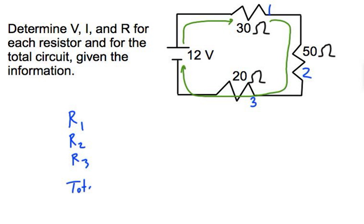I'm also going to make a total row. Then across I have V, I, and R - voltage, current, and resistance. I'll start filling this in right now.